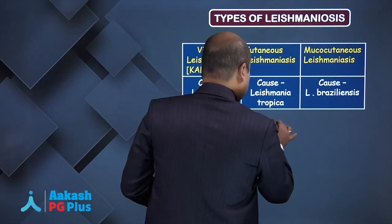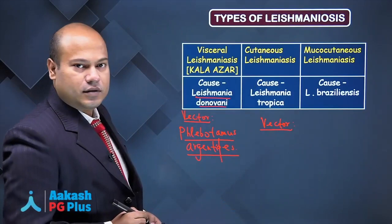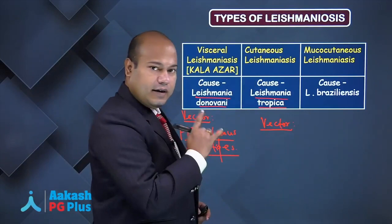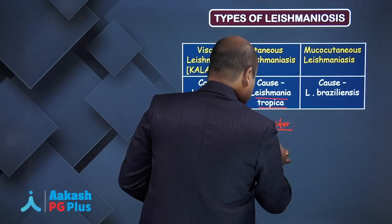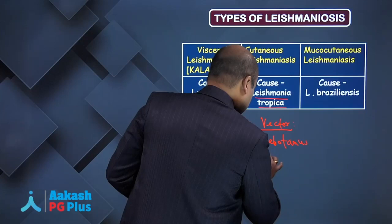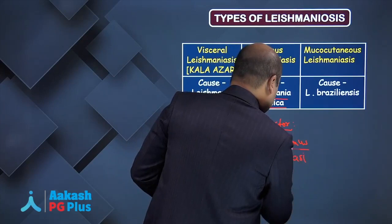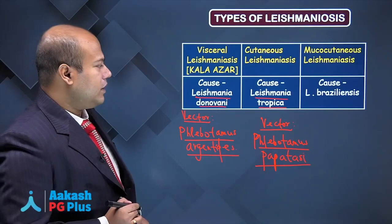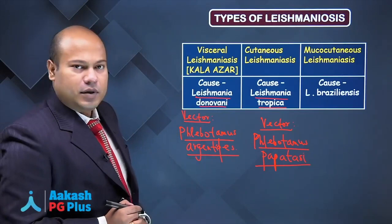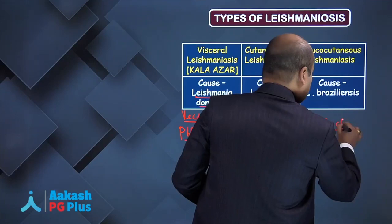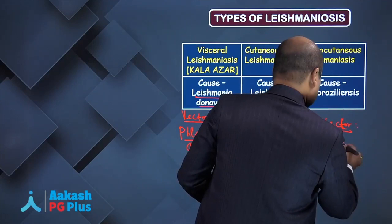The vector for cutaneous Leishmaniasis — caused by Leishmania Tropica — is Phlebotomus Papatasi. Mucocutaneous Leishmaniasis is also caused by Leishmania Tropica, and its vector is Phlebotomus Sergenti.